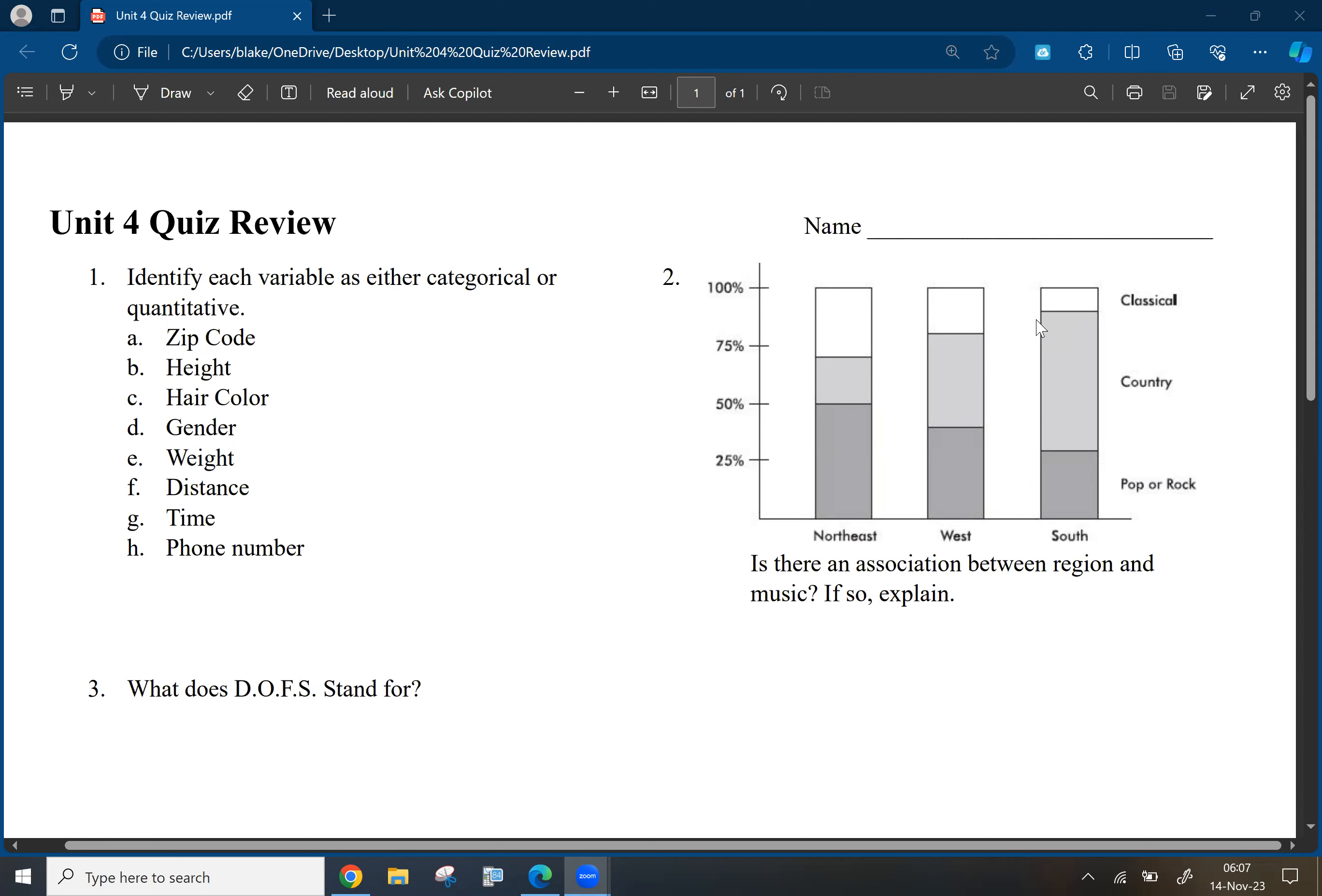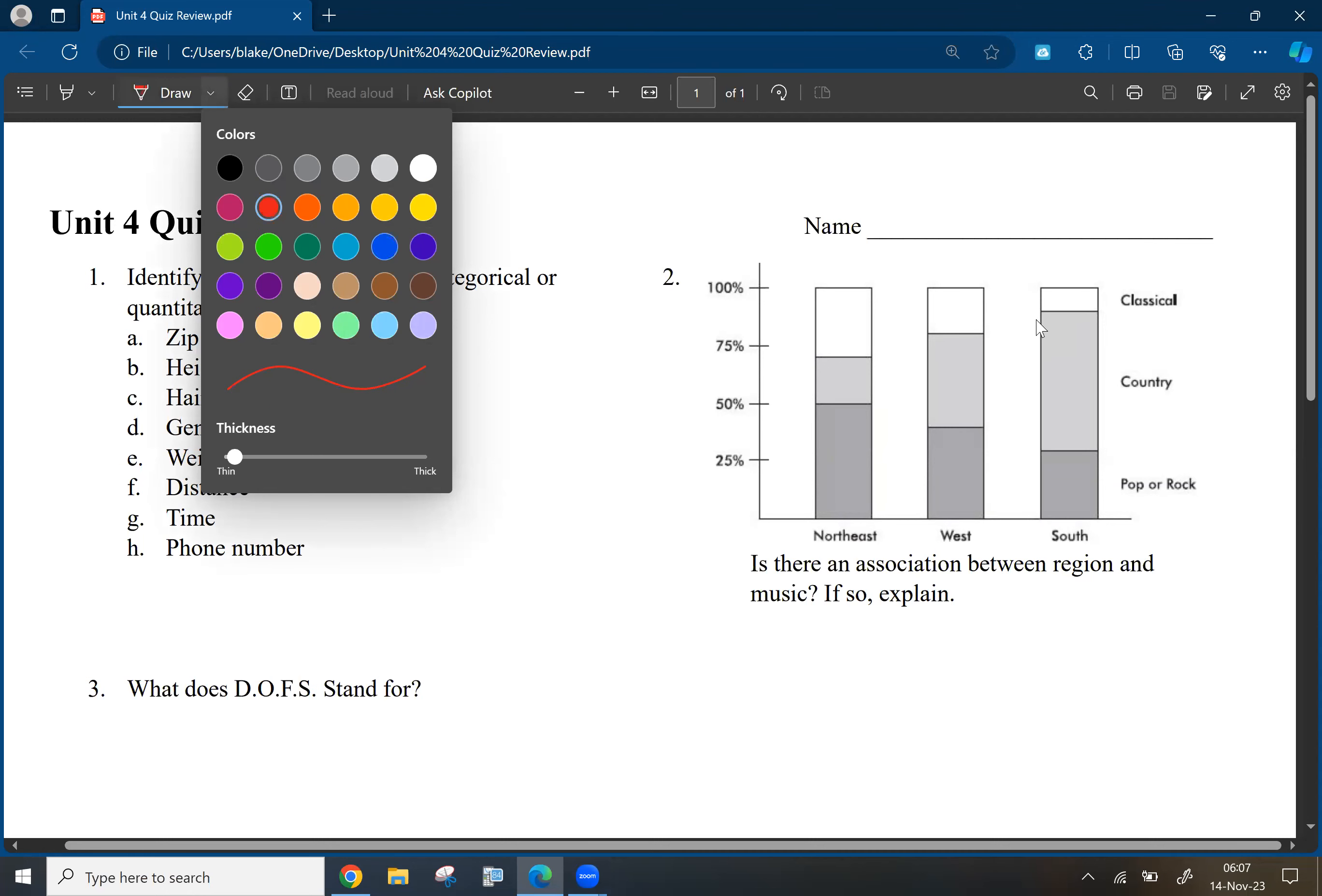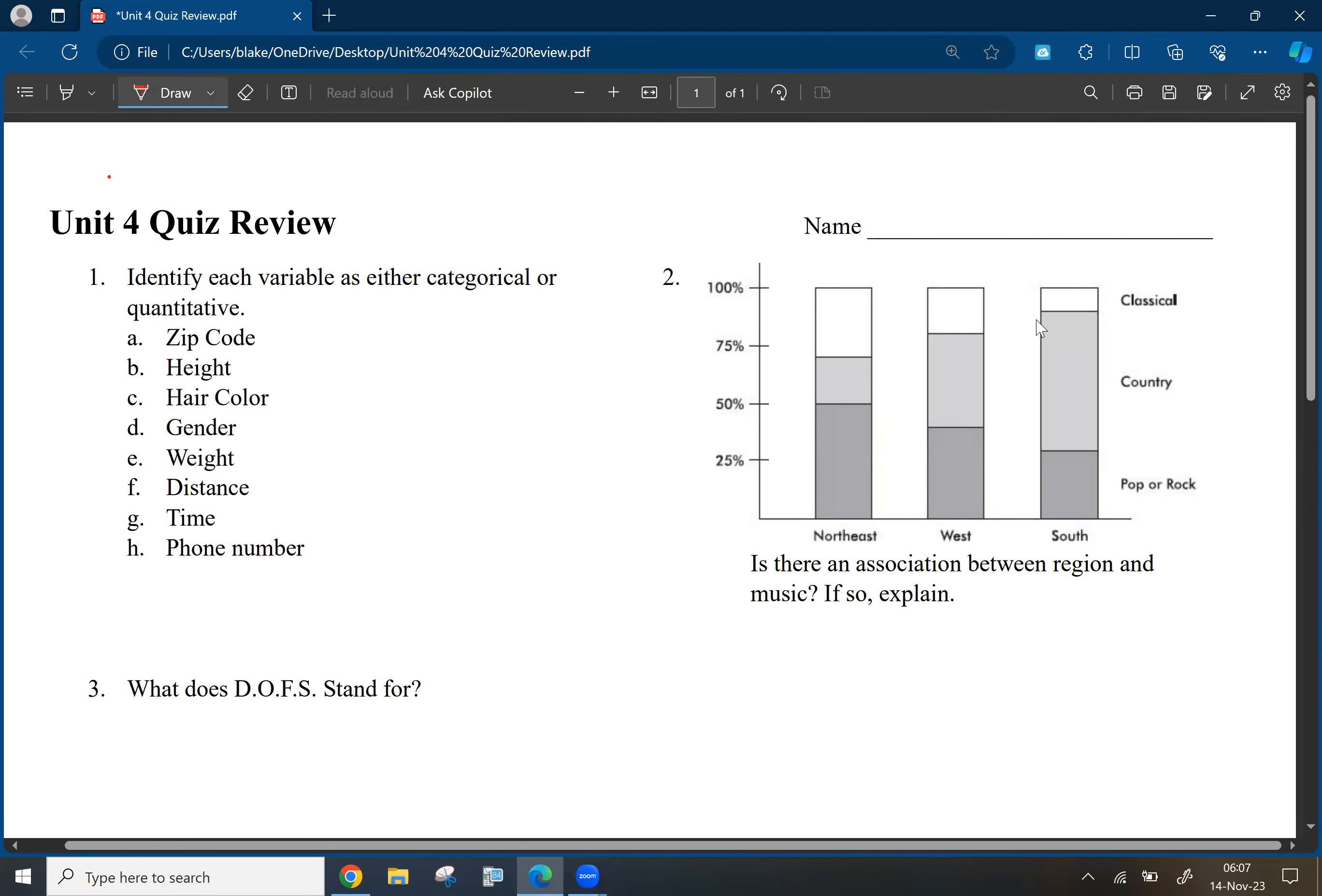We'll get started with number one. Identify each variable as either categorical or quantitative. Categorical variables are things that can be broken into categories, different labels. But quantitative things are more measurable things, things that you can count, measure, quantify, basically.